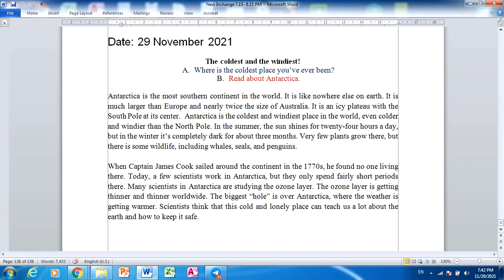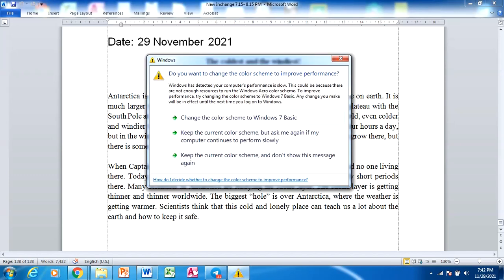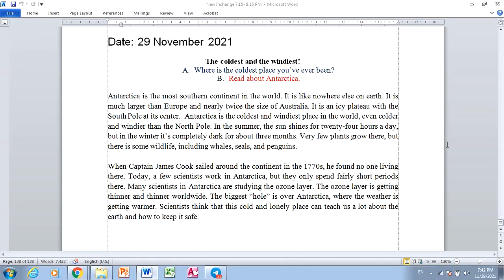In summer, the sun shines for 20 hours a day. But in the winter, it's completely dark for about three months.